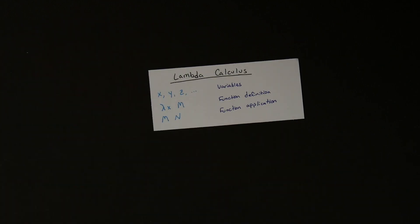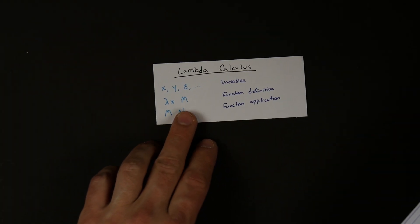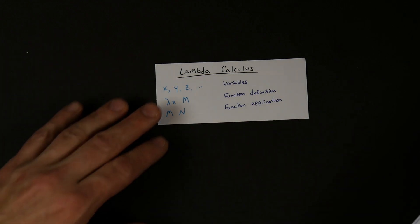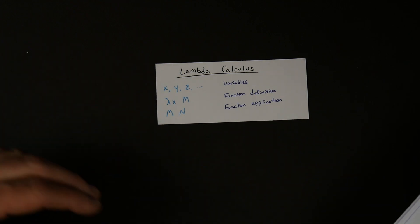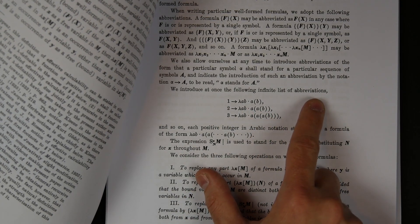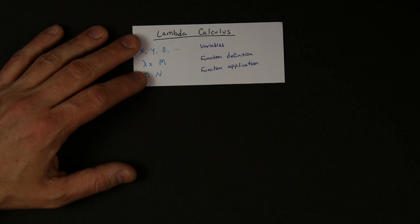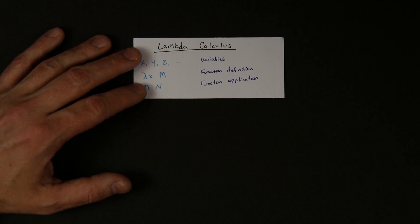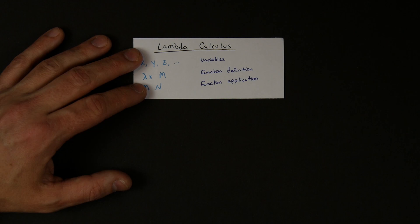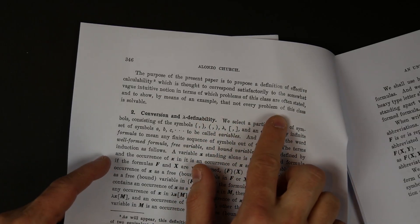From these rules, Church argued you can build anything needed to calculate anything calculable. There aren't any numbers in these rules — when you're defining a function, all you have is abstract variables. You have to define numbers, Boolean values, everything. On page three of his paper he's actually defining abbreviations for the numbers one, two, three, and so on. It's a very fundamental, very abstract way of describing computing.